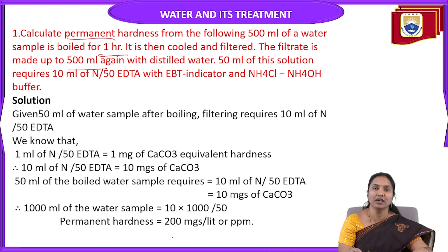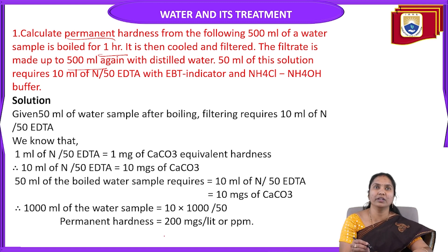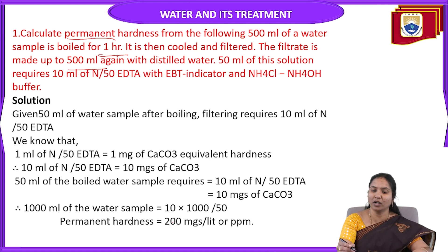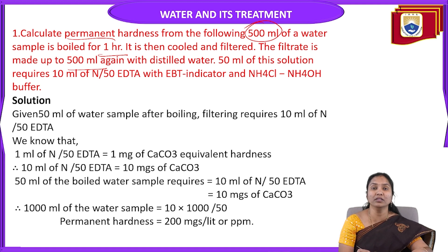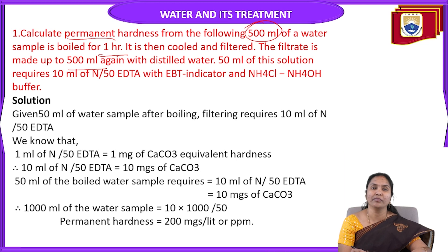What are the permanent hardness causing sources present in water? Calcium and magnesium ions of sulphates, chlorides, and nitrates present in water. What is the purpose of boiling? Because we can remove temporary hardness causing ions which are present in water. Generally, the temporary hardness causing ions are calcium and magnesium ions of bicarbonates present in water, and these can be removed by boiling.